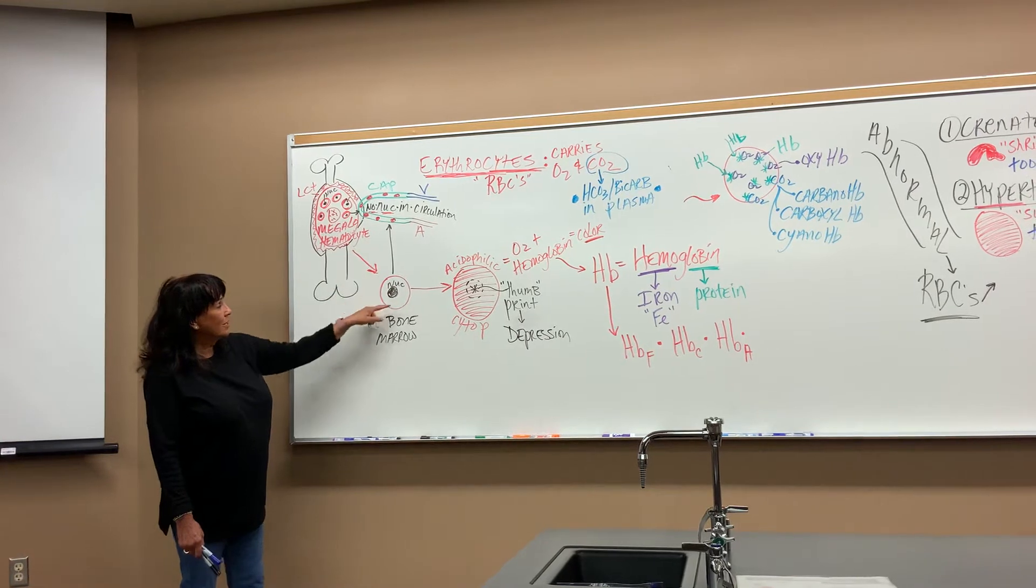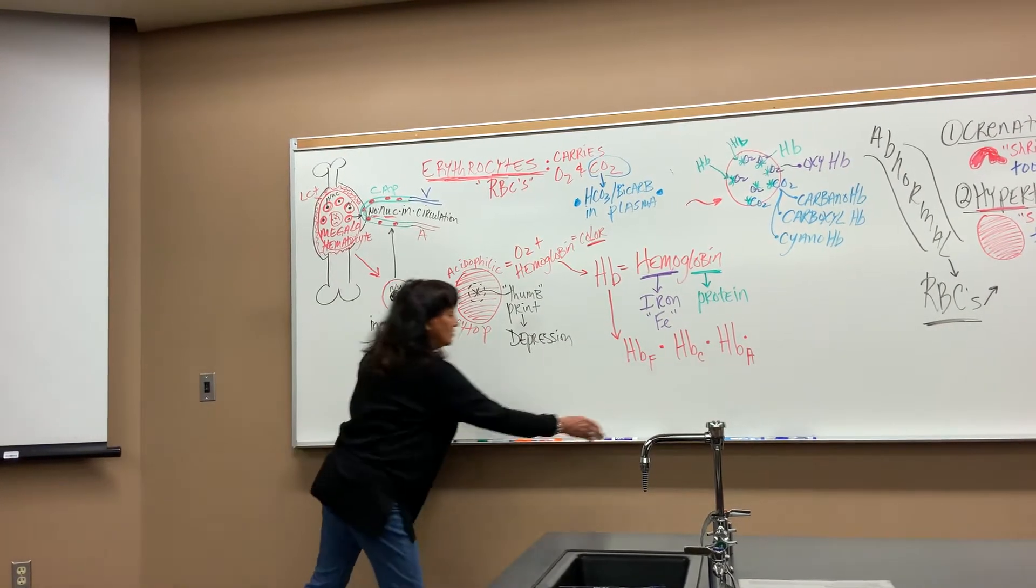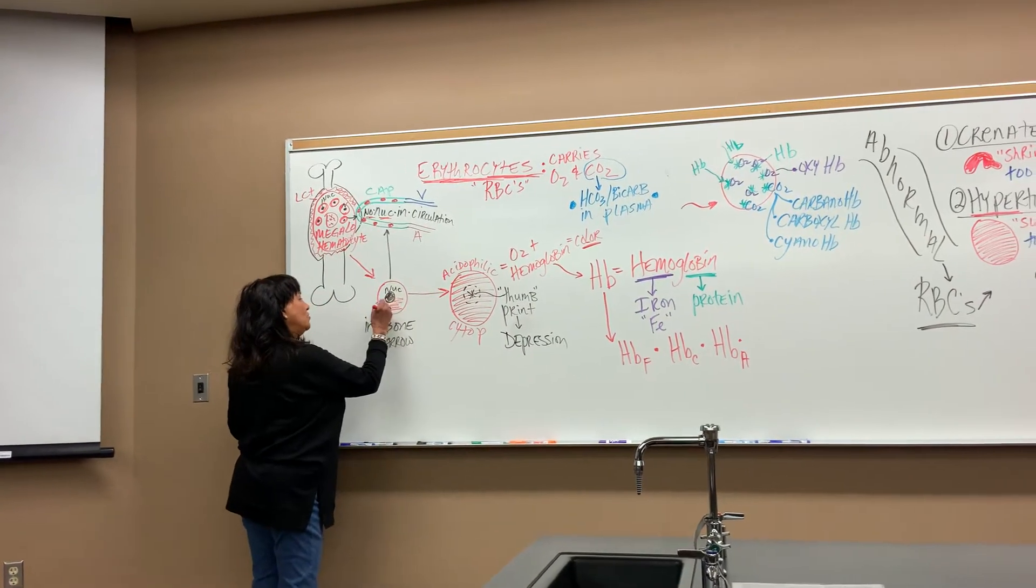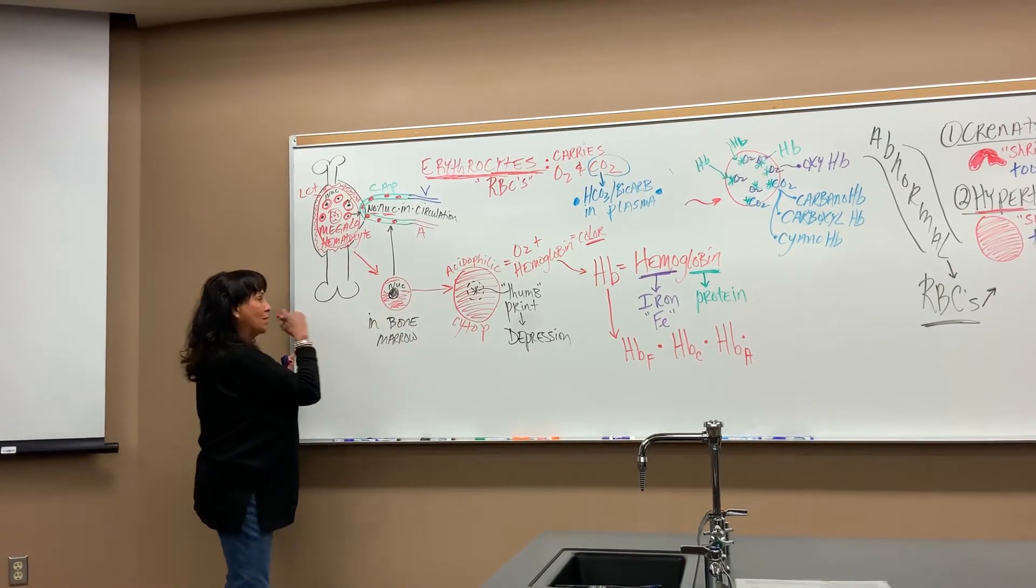Here's a normal red blood cell. It should have some red cytoplasm, pinky cytoplasm, and a nucleus when it's in the bone marrow. So in the bone marrow, there it is.